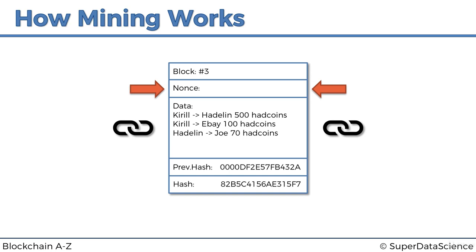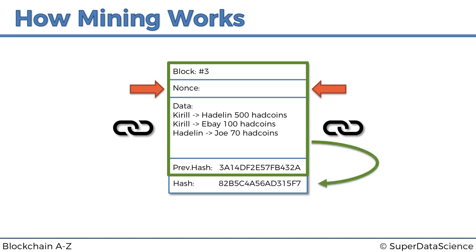To understand this, let's look at what now controls the hash in this updated block structure. It's the things highlighted in the green square: the block number, the nonce, the data, and the previous hash. We take all four components, put them into a hashing algorithm, and it spits out the hash value.